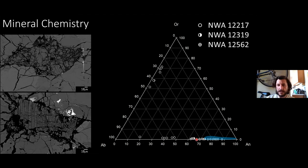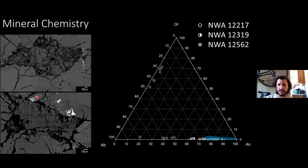In NWA 12562 and 11319, there aren't these nice little inclusions — instead feldspars are scattered throughout the breccia. The compositions that were measured are plotting in a much more anorthitic range. In blue I have the feldspar ranges of the HED meteorites, and you can see there's quite a bit of overlap between them.